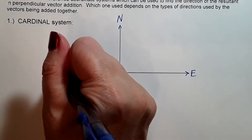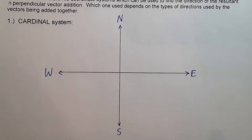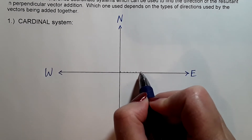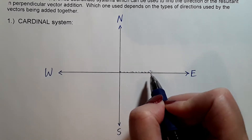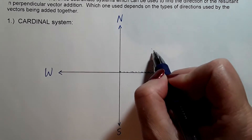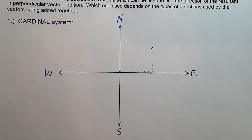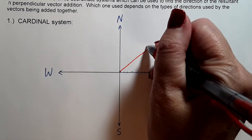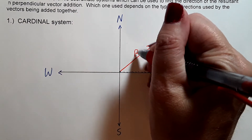East is to the right and west is to the left — that's how we position geographic directions. Now, if we have vectors in a particular quadrant, we'll do one quadrant at a time. Suppose we had two perpendicular vectors and we added them tip to tail. You get a resultant that is somewhere between — if you're in the first quadrant — somewhere between north and east, just like this.